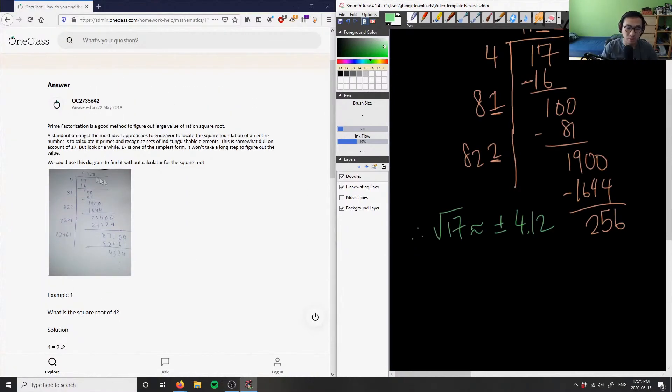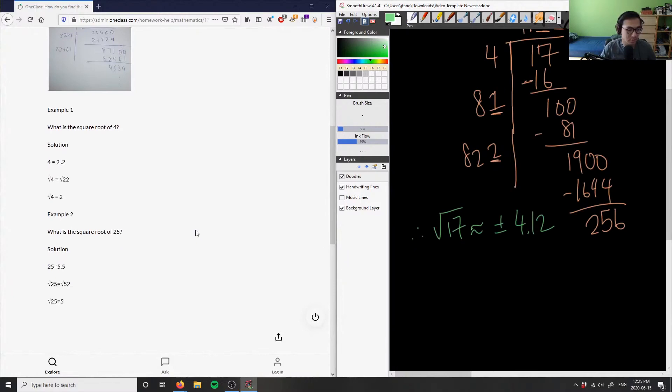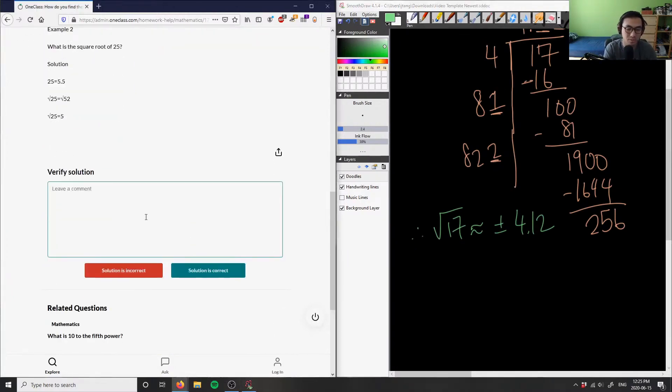And they got 4.1231, which is our correct solution as well. So this solution is correct, but I don't think they actually gave us a concluding statement, so I'm just going to write it out for them. It's correct. The square root of 17 is approximately plus or minus 4.12. So the solution is correct.